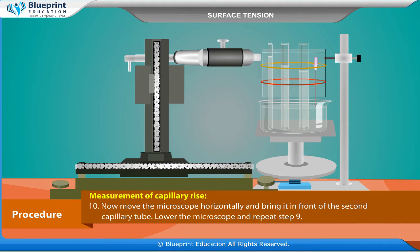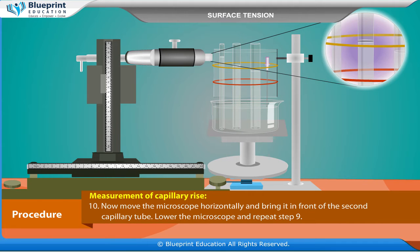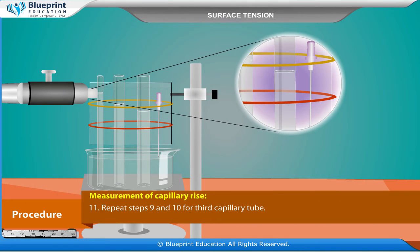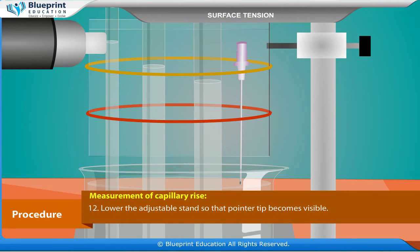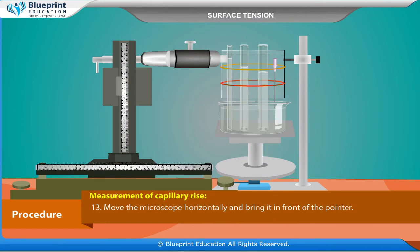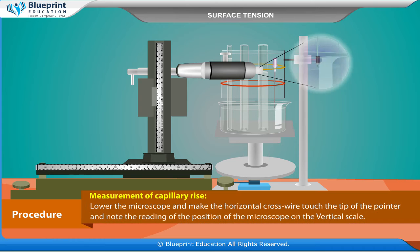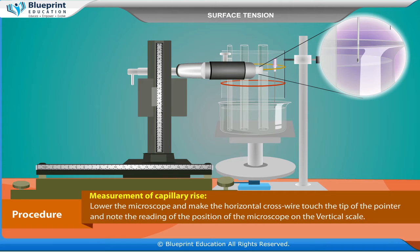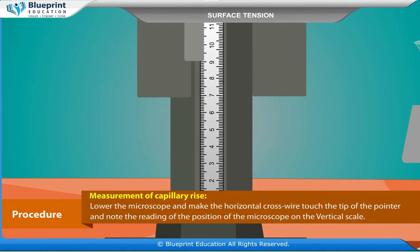Now move the microscope horizontally and bring it in front of the second capillary tube. Lower the microscope and repeat the previous step. Repeat for the third capillary tube. Lower the adjustable stand so that the pointer tip becomes visible. Move the microscope horizontally and bring it in front of the pointer. Lower the microscope and make the horizontal cross wire touch the tip of the pointer, and note the reading of the position of the microscope on the vertical scale.